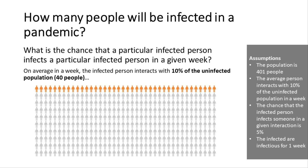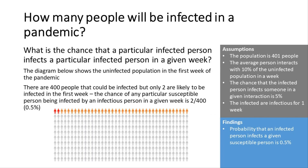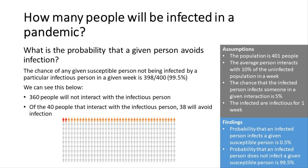Daniel interacts with 10% of the uninfected population in a week — that's 40 people in our population of 401. On average, he infects 5% of those 40 people, so that's two people infected. The chance that Elijah is one of those two people is calculated as the number infected on average — two — divided by the total number of people he could possibly infect — 400. So the chance of Elijah being infected by Daniel is 0.5%.